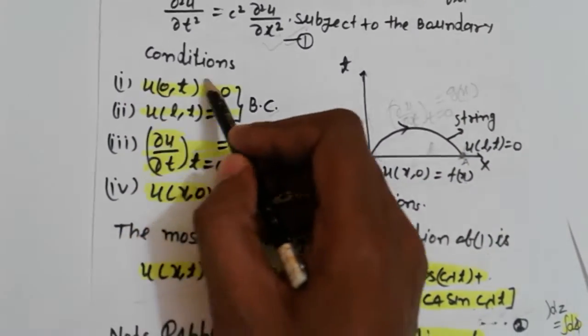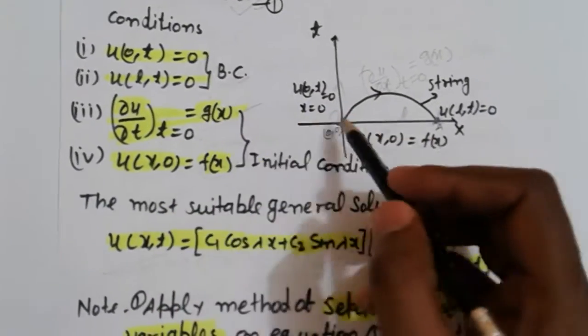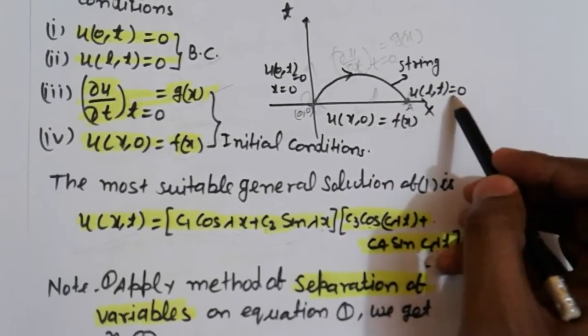First boundary conditions: u(0,t) = 0, u(l,t) = 0. Here origin is at 0,0 and length of the string is l, where u(l,t) = 0 at the boundary.